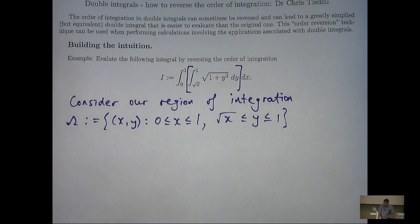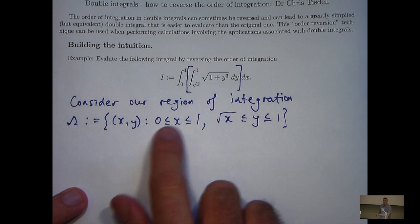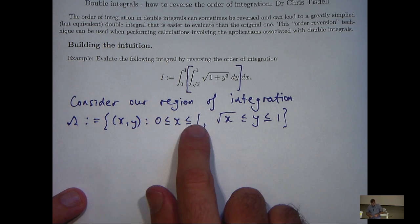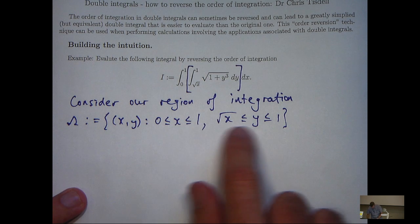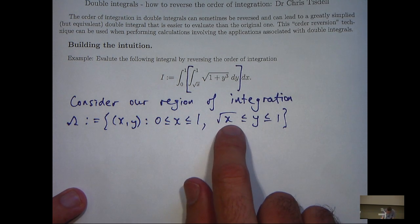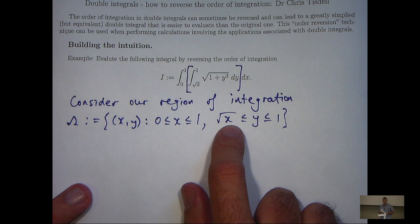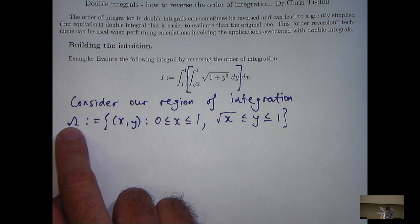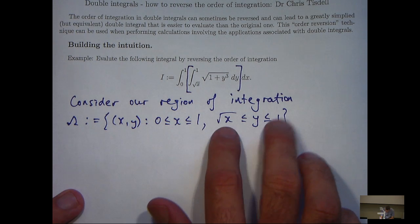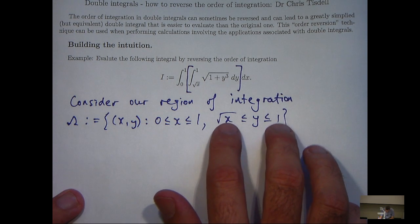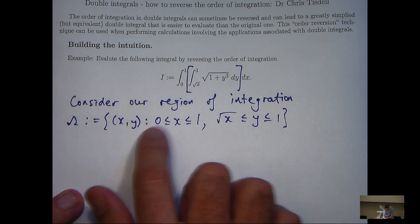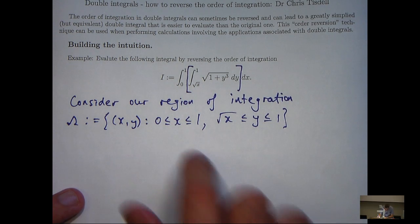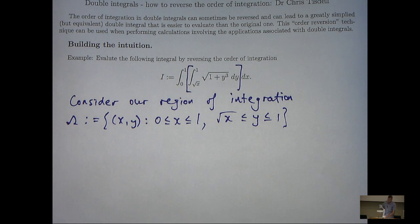Now, you can see that under this description of omega, x is bounded below and above by constants, and y is not necessarily bounded by constants. Okay, what we are going to try to do is to mathematically re-describe this region omega and have two constants bounding our y and not necessarily having two constants around our x. So, the nature of these bounds are being reversed.